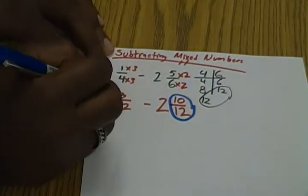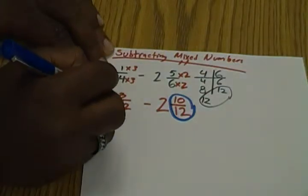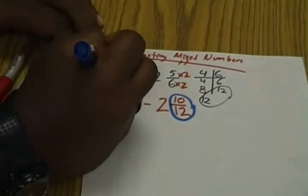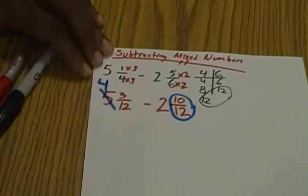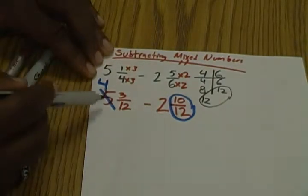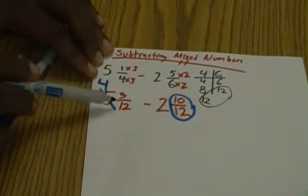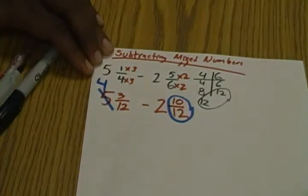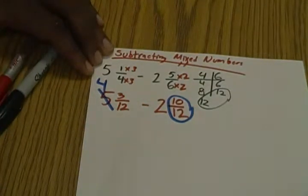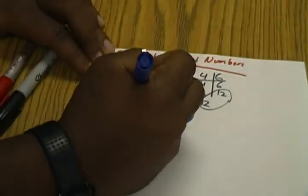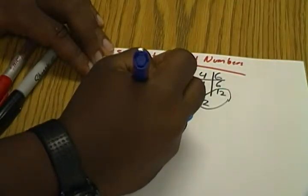So now we have to regroup. We're going to borrow a whole. So we're going to cross out the 5, this now becomes a 4. And we have to bring over a whole. So we look at our denominator. What equals one whole with a denominator of 12? 12/12 is the same thing as one whole. So we're going to add 12/12.